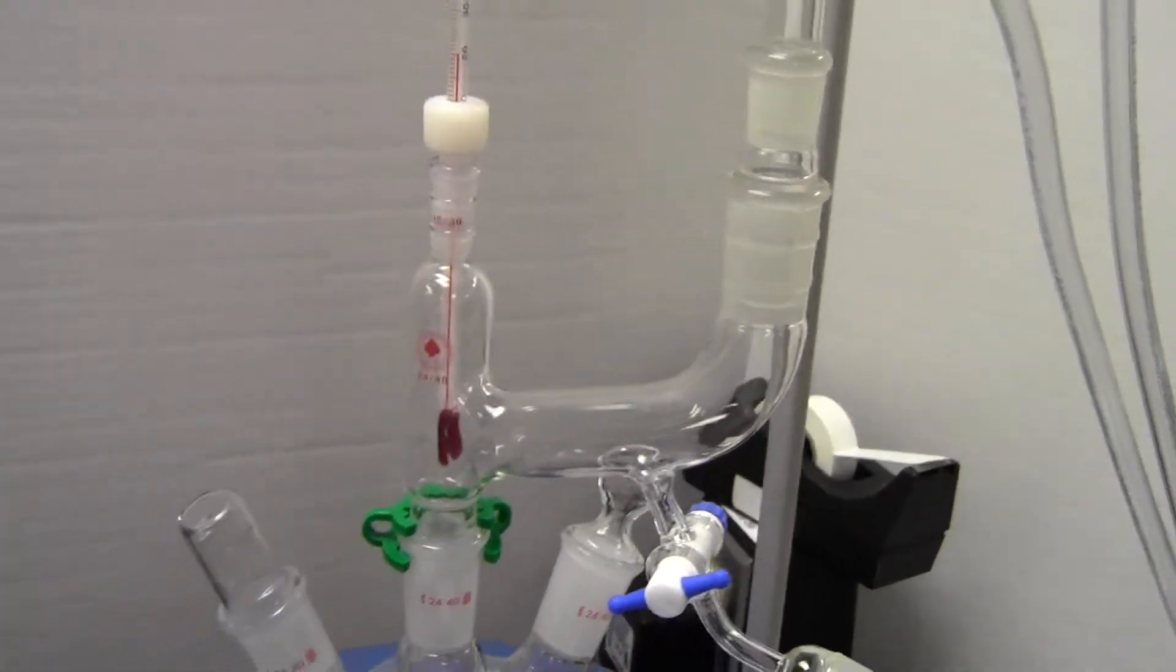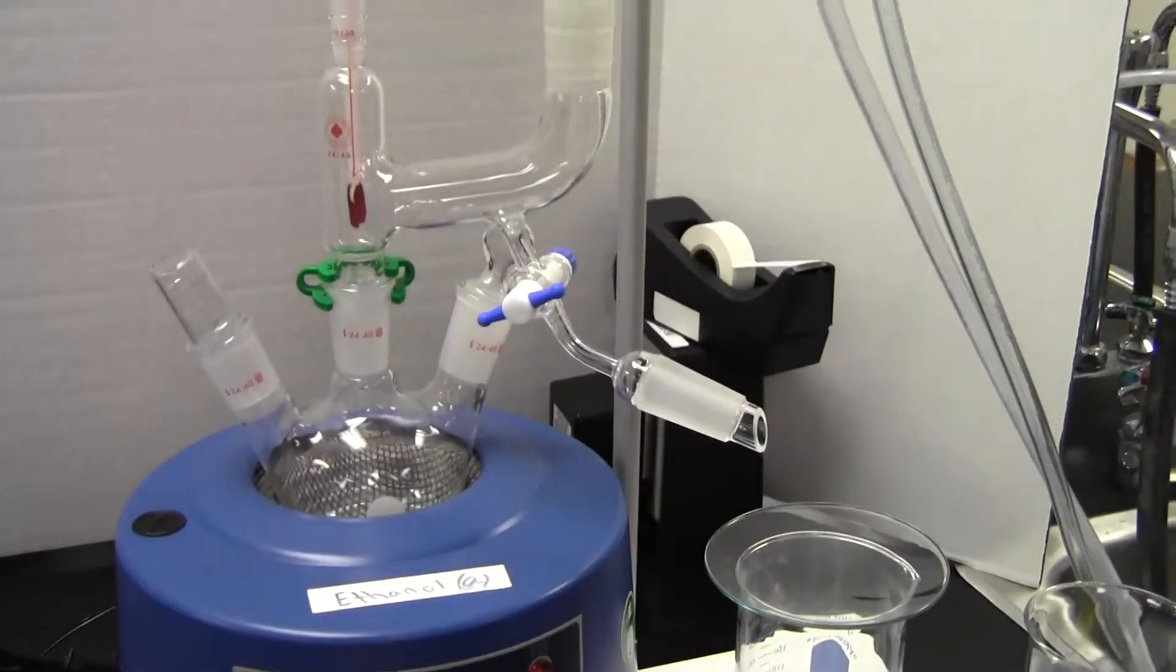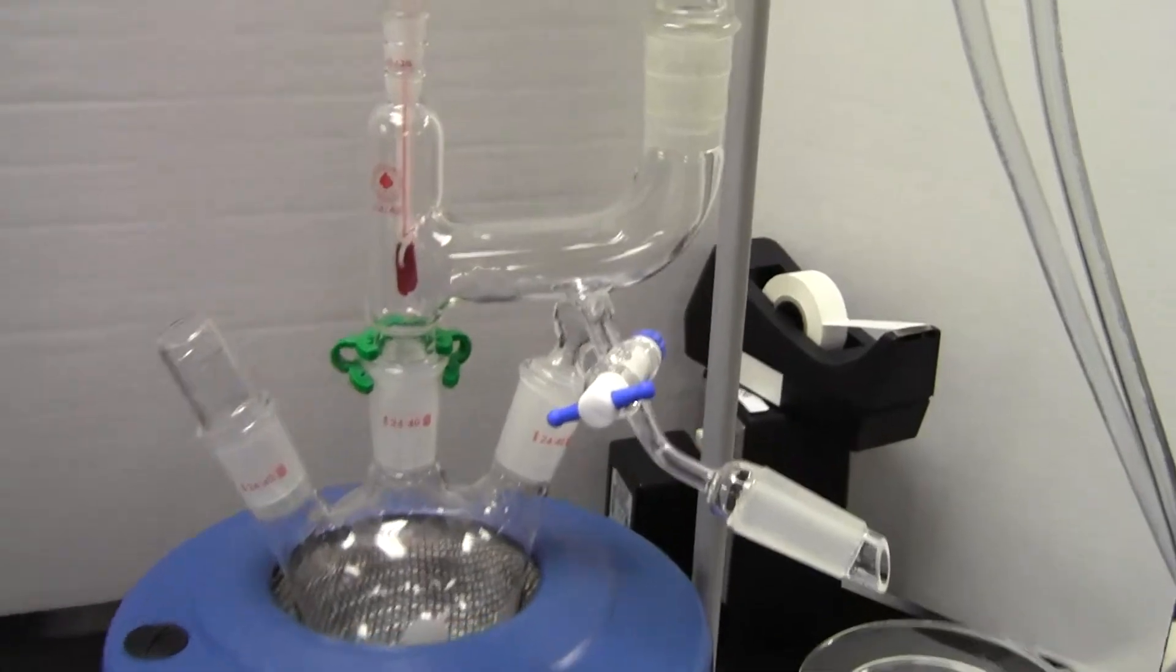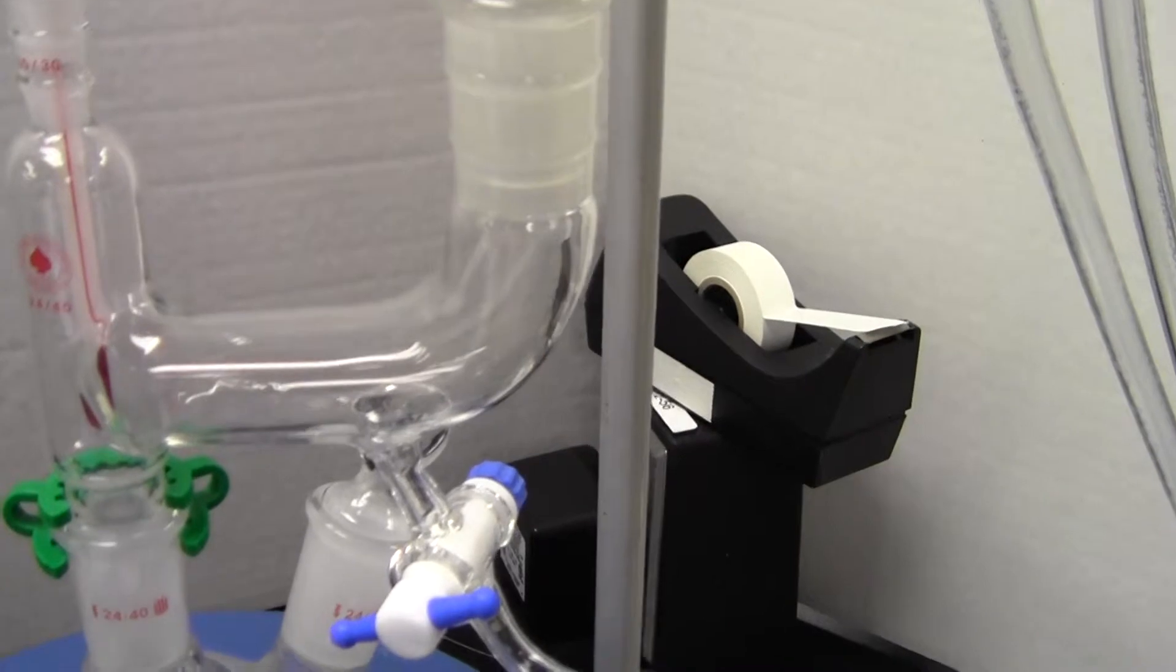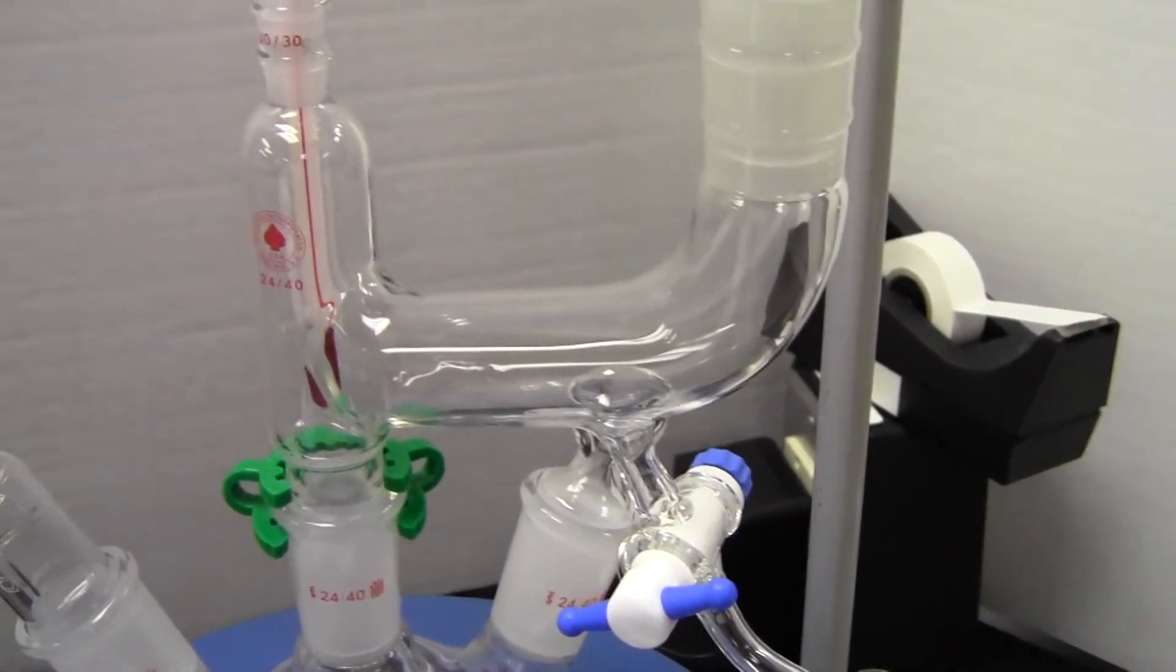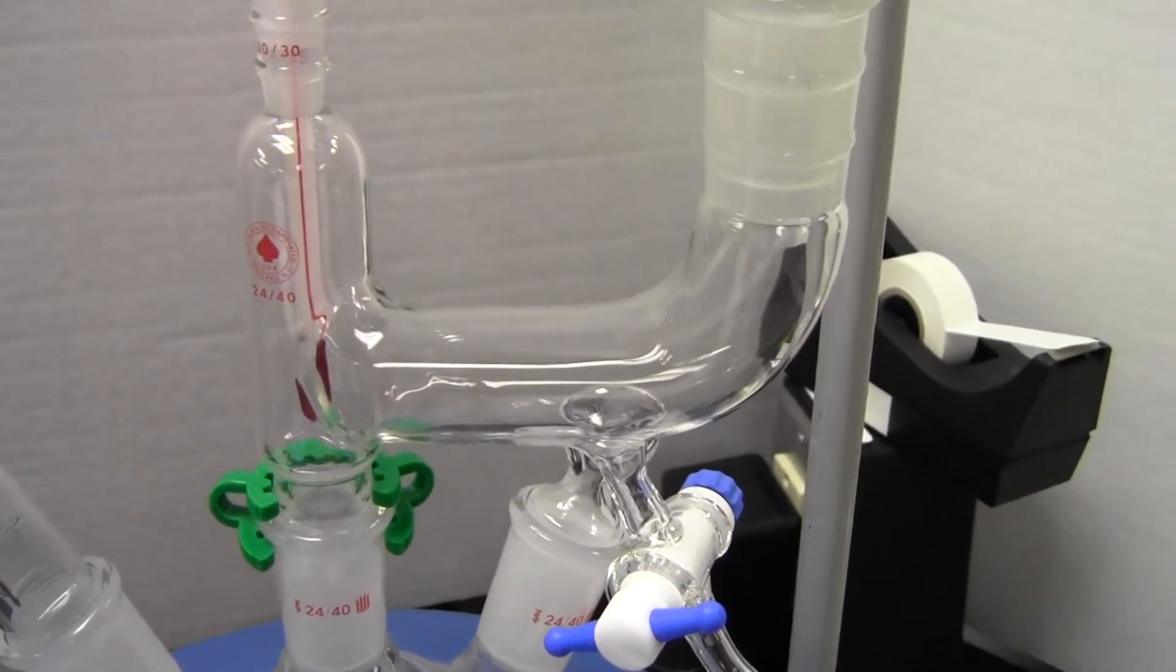When we have phase equilibrium between the vapor and the liquid, the temperature is recorded right there at the interface. Bring the ethanol to a boil and record the boiling temperature. Don't record it too quickly; make sure it's steady.